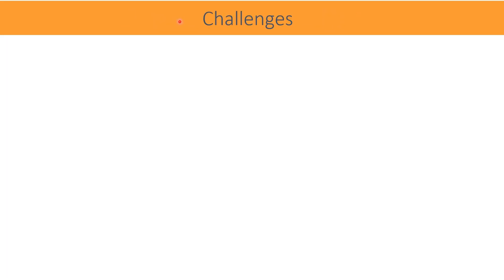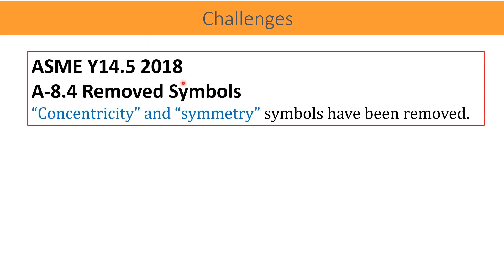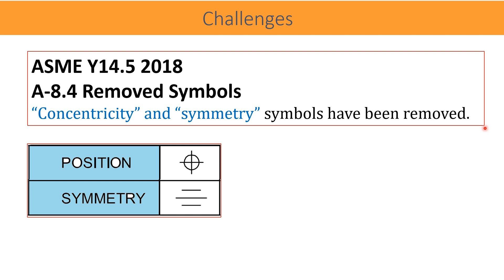It was a big surprise to industry when ASME Y14.5 2018 version was released, and it was found that two very popular GD&T symbols were removed from the standard — one was concentricity and another was symmetricity. It has now been more than 45 years since concentricity was first included in ASME Y14.5 in 1973, and symmetry was officially included for the first time in the 1994 version. If concentricity and symmetry are no longer available, the suggested alternative controls are position and runout.